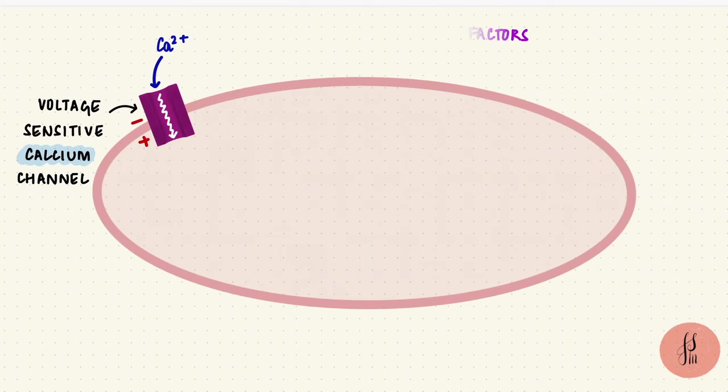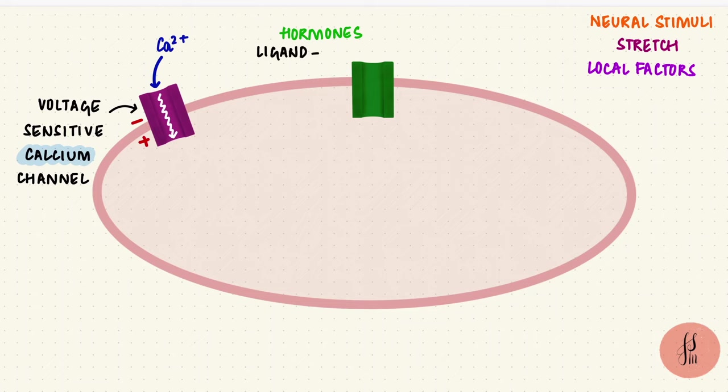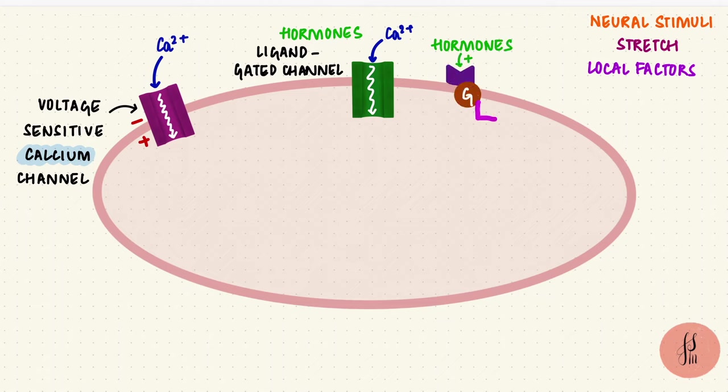There are hormonal factors as well, which act on ligand-gated calcium channels, letting calcium enter the cell. Hormones or neurotransmitters could bind to a receptor coupled with a G-protein. That can activate a second messenger like phospholipase C, which is an enzyme, catalyzing the hydrolysis of phosphatidylinositol-4,5-diphosphate to inositol triphosphate, that's IP3, and diacylglycerol.